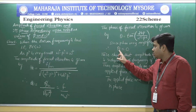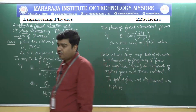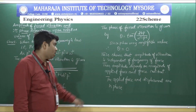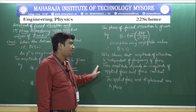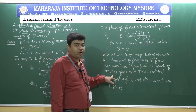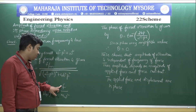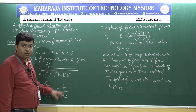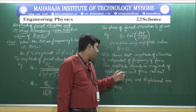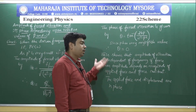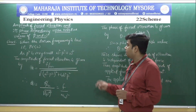Since tan inverse of 0 equals 0, theta becomes equal to 0. This means there is no phase difference — the applied force and displacement are in phase. The amplitude depends only on the magnitude of the applied force and the force constant (F/m divided by omega squared), and is independent of the frequency of the applied force.